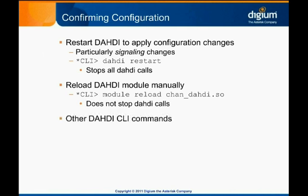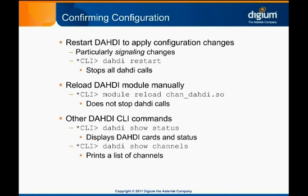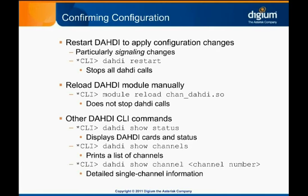There are a few other Dottie CLI commands worth knowing. Dottie Show Status displays Dottie cards and their status, while Dottie Show Channels prints a list of all the Dottie channels configured for use with Asterisk. If you've configured Dottie's system.conf but not Asterisk's chandottie.conf, you won't see the channels here. You can get detailed information about a single Dottie channel by using the Dottie Show Channel command with the channel number as the last argument.